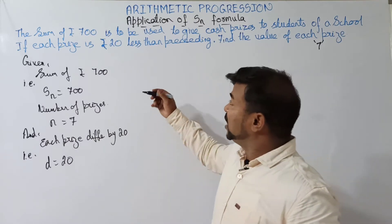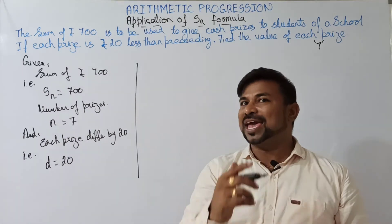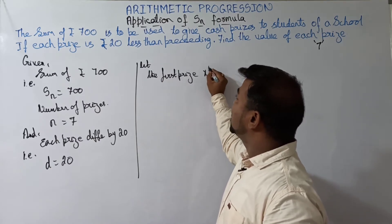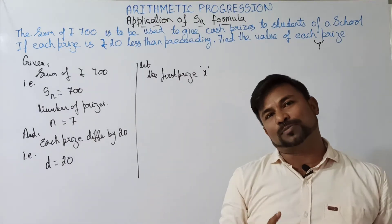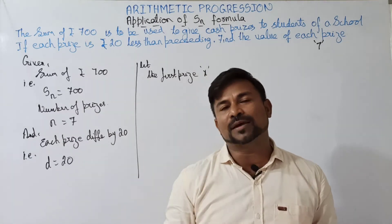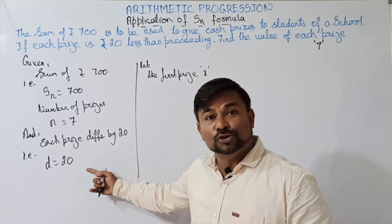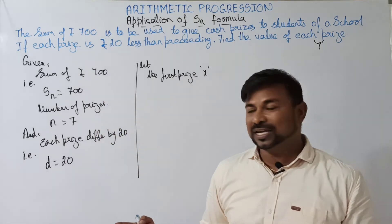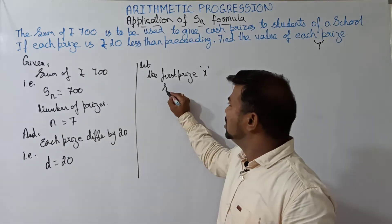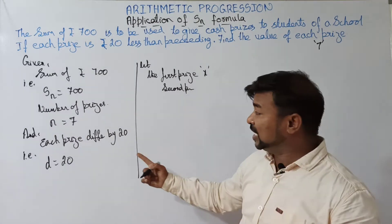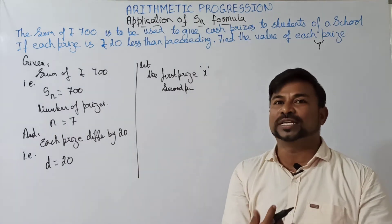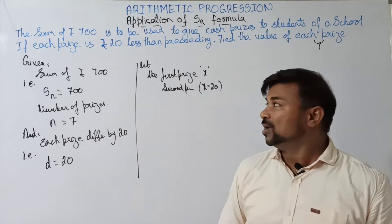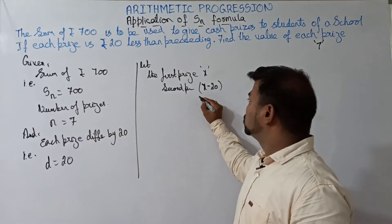Let us take a variable now. Let the first price be X — that is, let the first price be X. This is the variable we are supposed to use. So the variable I took is the first price, taking it as X. Now what is the condition? Let's utilize the condition and distribute the total 700 rupees across seven prices. If the first price is X, obviously the second one will be X minus 20.